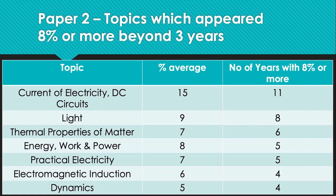Light has appeared at least eight times with 8% or more with an average percentage of 9%. There are quite a number of concepts under the topic of light. Reflection, refraction, critical angle, total internal reflection and lenses. So it's very important to spend time studying this topic. It is a very significant topic that cannot be ignored.